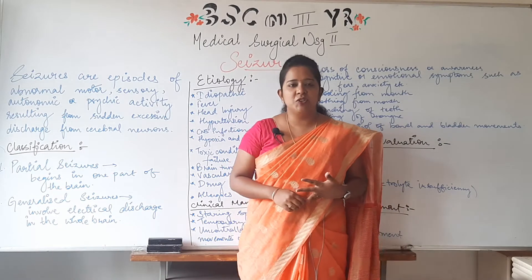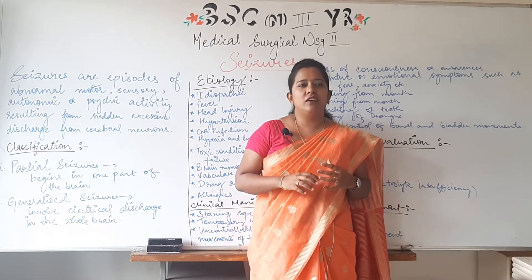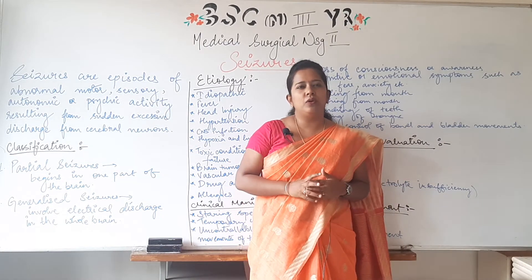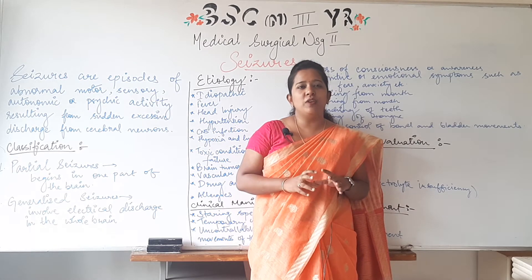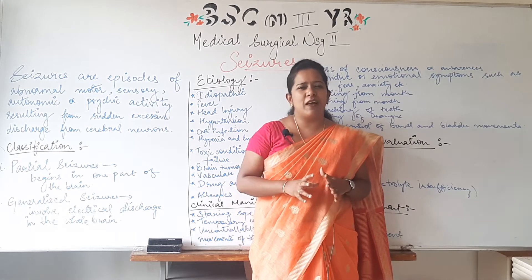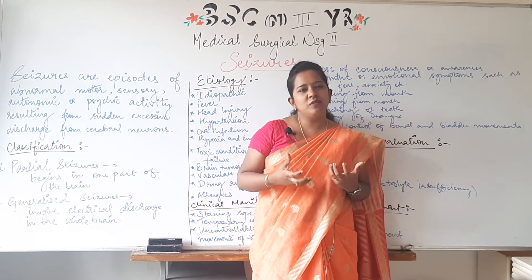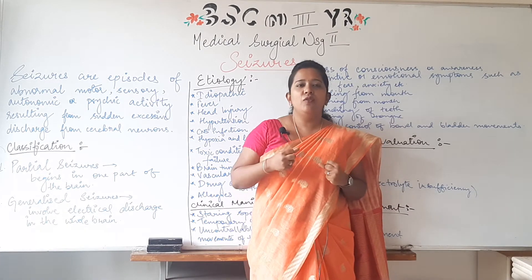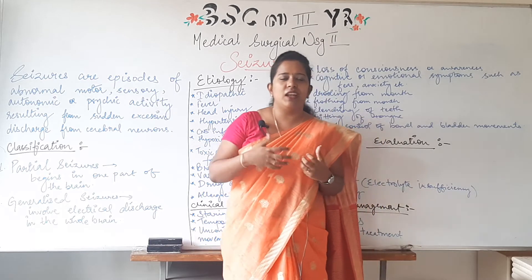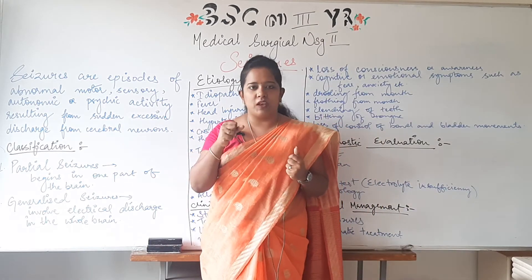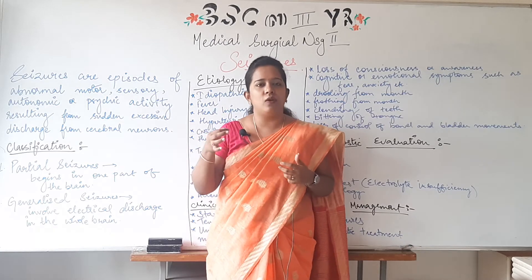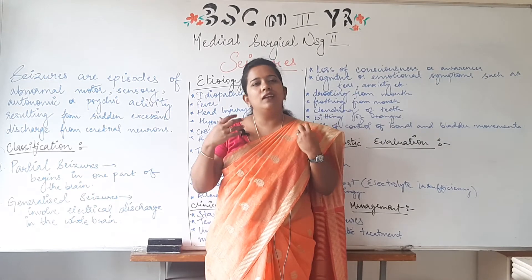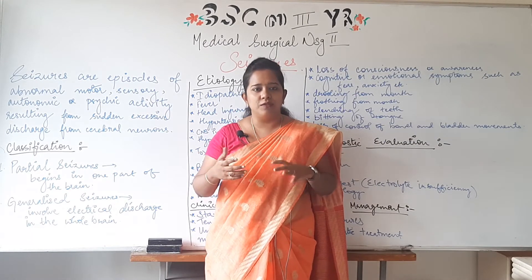Today our topic is Seizures. Seizures is a severe neurodisorder. What happens is that the neurotransmitters are disbalanced. The neurotransmitters are involved in the neurons. For example, when we think we have to hold a pen or something, there is an amount of neurotransmitters that are getting transmitted from our nerves.